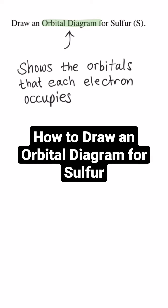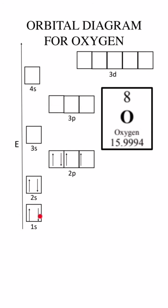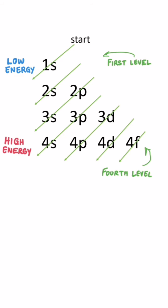An orbital diagram is a diagram that shows the orbitals that each electron is occupying. Electrons are represented with arrows or half arrows, and there can be a maximum of two electrons in an orbital. The arrows must be in opposite directions. Each energy level has a different number of sublevels and orbitals.